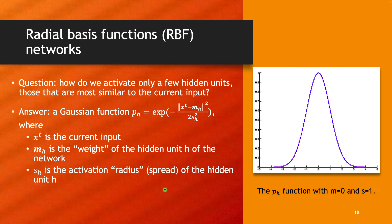If you want to apply this concept in deep neural networks, the question is how to activate only a few hidden units — only those most similar to the current input. To do this, you have to move away from the multiplicative computation used in multi-layer perceptrons and adopt something different.